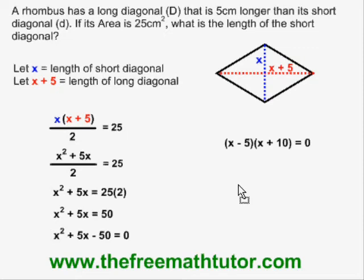Factored, this trinomial gives x minus five times x plus ten equals zero. If we do the split, we have x minus five equals zero or x plus ten equals zero. And therefore, x equals five or negative ten.